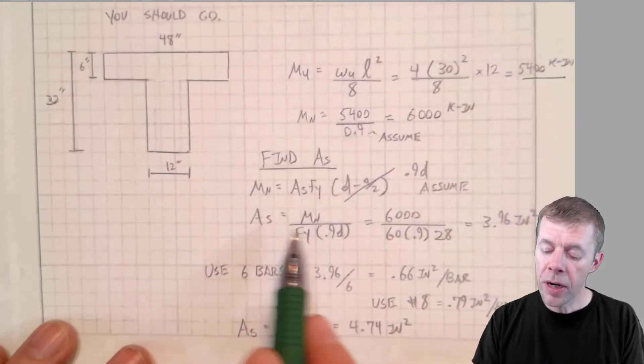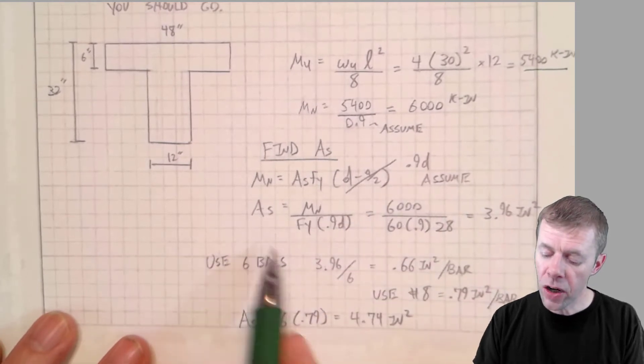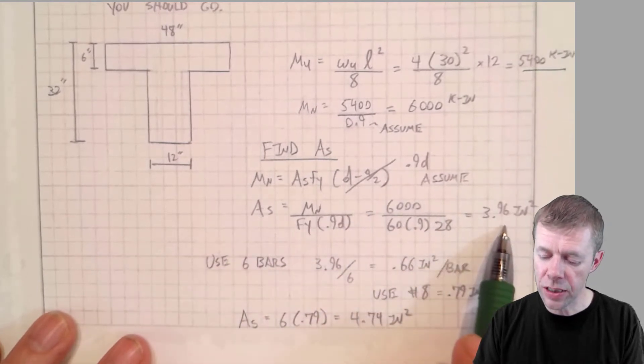And now I start plugging in. I'm gonna use my 0.9 D trick. I told you before. I'm gonna assume that. I'm gonna find my area of steel is 3.96 inches squared.